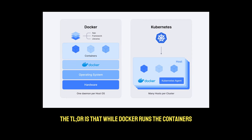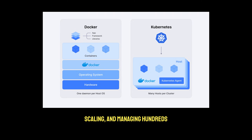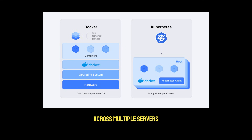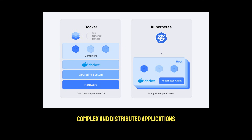The TLDR is that while Docker runs the containers, Kubernetes handles the orchestration — operating, deploying, scaling, and managing hundreds or even thousands of containers across multiple servers. It's the ultimate tool for running complex and distributed applications.